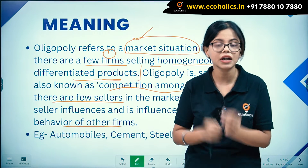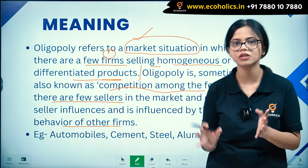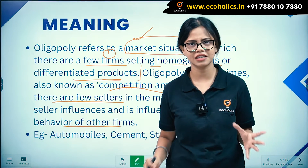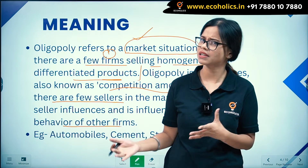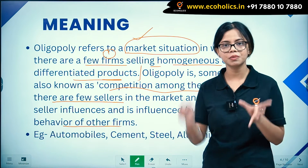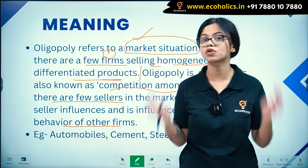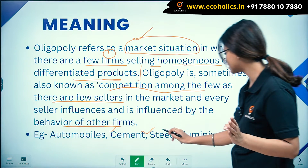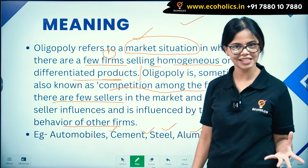These firms generally do not want to indulge in a price war — that is a separate concept we will cover later. The key point is that within oligopoly, actions of one firm affect other firms in terms of both output and price. Examples of oligopoly industries include automobile, cement, steel, and aluminium.